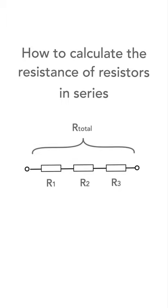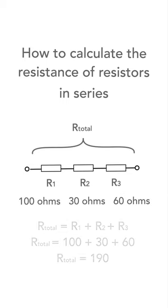Or if we have three resistors in series, say 100 ohms, 30 ohms and 60 ohms, then the total is 190 ohms.